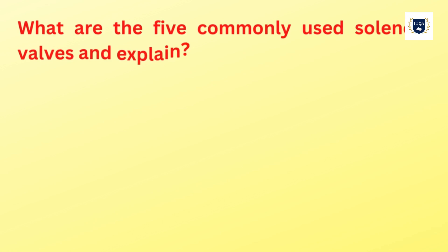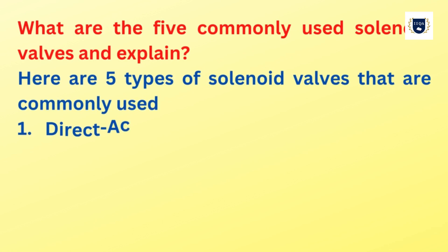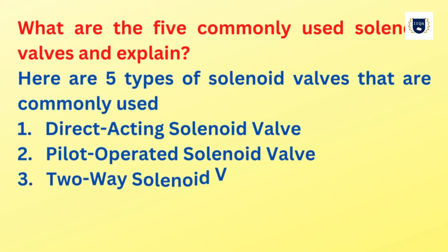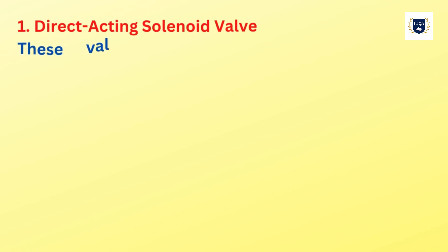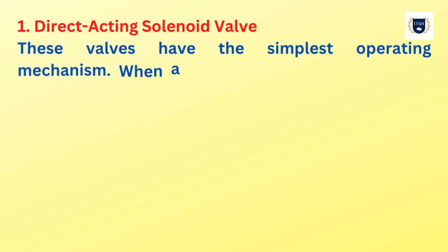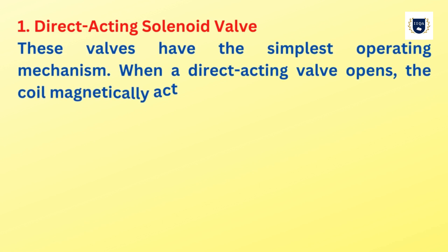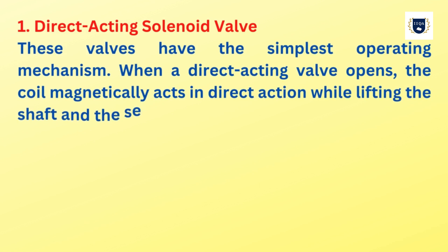What are the five commonly used solenoid valves? Here are five types of solenoid valves that are commonly used: one, direct acting solenoid valve; two, pilot operated solenoid valve; three, two-way solenoid valves; four, three-way solenoid valve; five, four-way solenoid valve. Direct acting solenoid valves have the simplest operating mechanism.